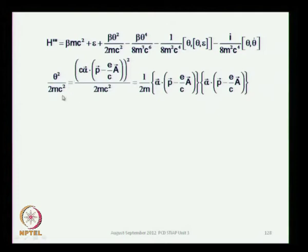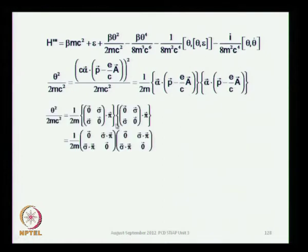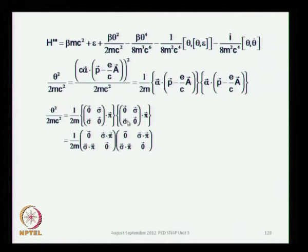Look at this term: theta squared over 2mc², which appears here. Let us see its explicit form. Theta is c·α·(p − eA/c), and now I am using Gaussian units - some earlier relations were in natural units where c = 1 and ℏ = 1. Here we have placed them explicitly, and you have this alpha dot the generalized momentum and the square of it. If you plug in the expression for alpha, which is the matrix operator [0 σ; σ 0], you get σ·π and σ·π from these terms.